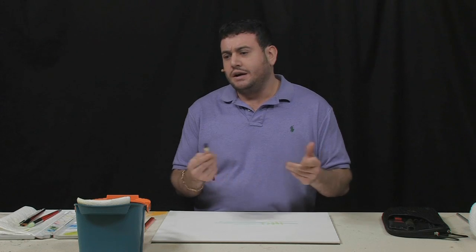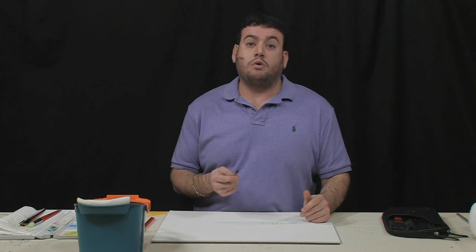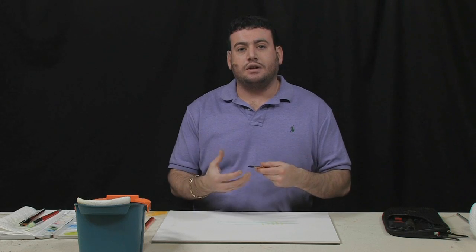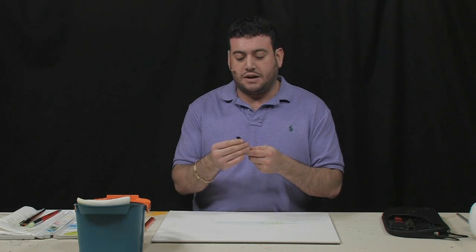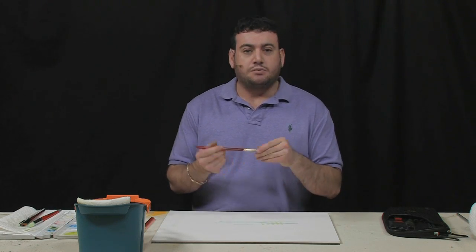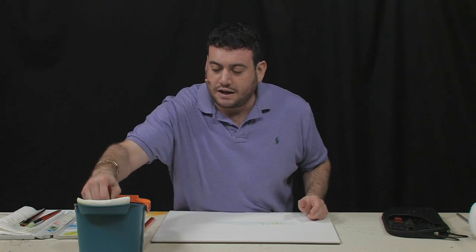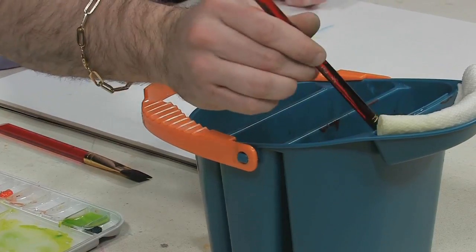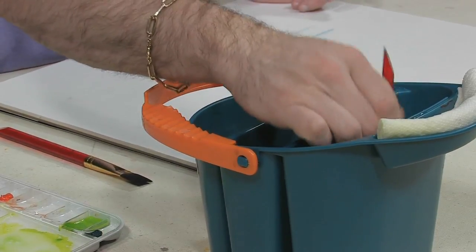They add something like a gum arabic, which is a very typical additive in watercolor. And it just stiffens the bristles like a starch to give it a little bit more strength, so in case in shipping it gets pushed on or pulled on, it will be more resilient. So, it's water soluble. All you have to do is get the brush wet and break up the starch, and it will get extremely soft almost immediately.